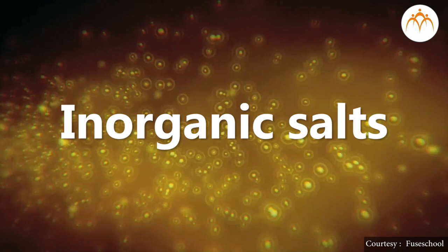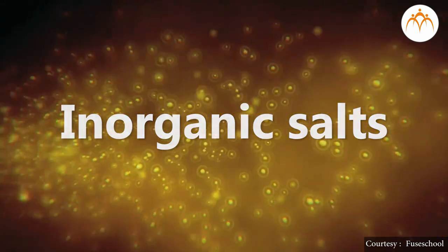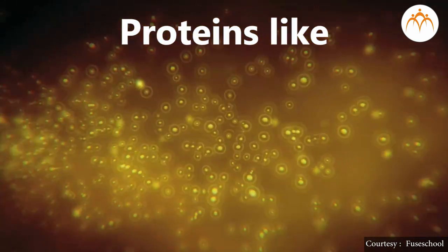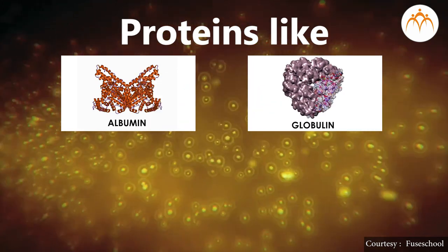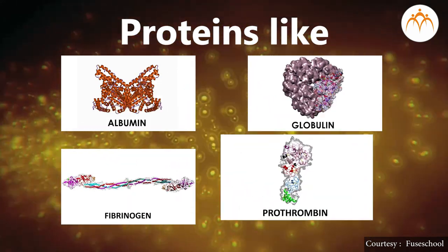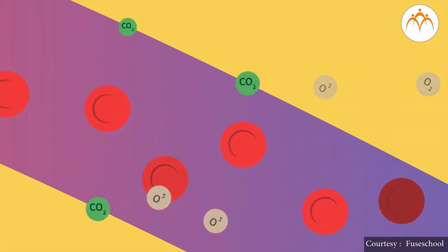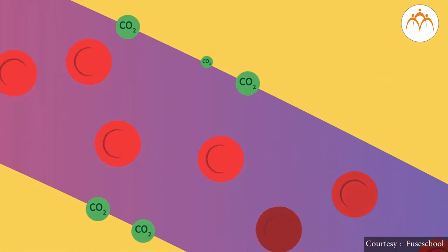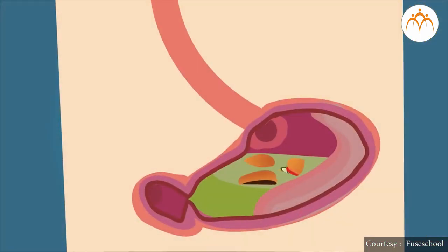Among the variety of components in plasma, there are inorganic salts, proteins like albumin, globulin, fibrinogen, and prothrombin, gases like oxygen and carbon dioxide, nutrient molecules formed after food digestion, and also water molecules.